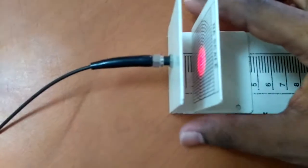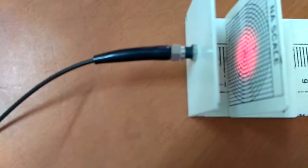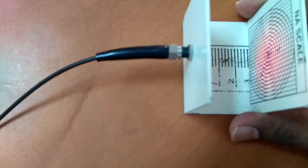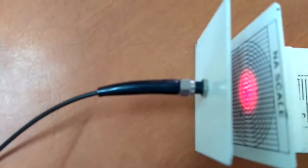For ring number three, again you vary the distance and measure it. Similarly for ring numbers four, five, and six, we need to ensure that the maximum intensity of light is engulfing the respective rings.